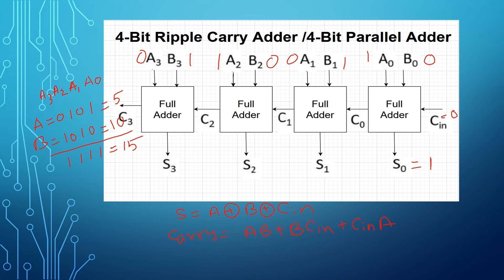For the carry we need to compute AB plus BC_in plus C_in·A. So 1 times 0 is 0, and 0 times 0 is 0 again, so carry C0 is 0. Now for S1, we perform the same XOR operation: 0 XOR 1 is 1, and 1 XOR 0 is 1. Multiplying and adding for carry using AB plus BC_in plus C_in·A, carry C1 is also 0.